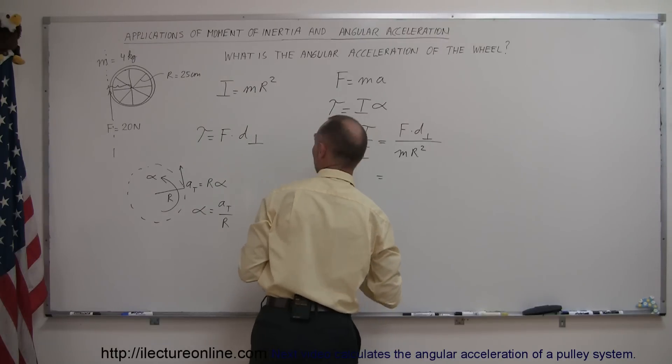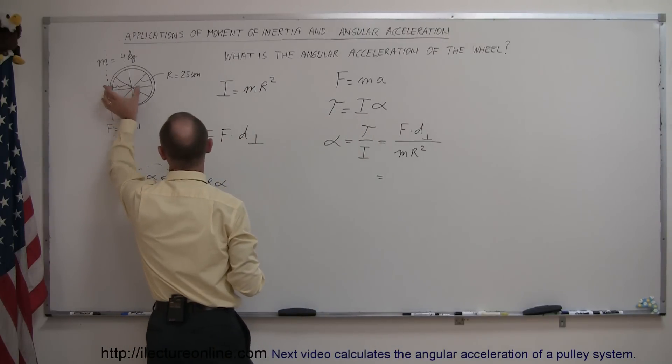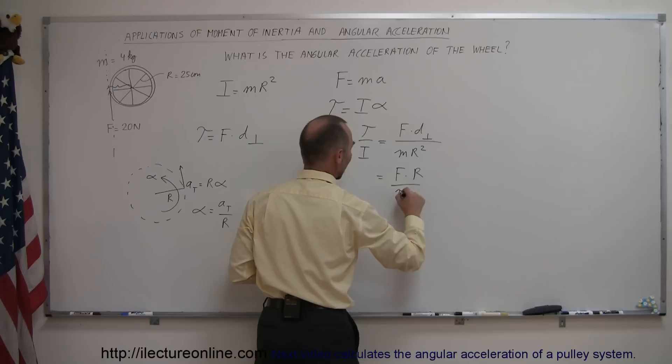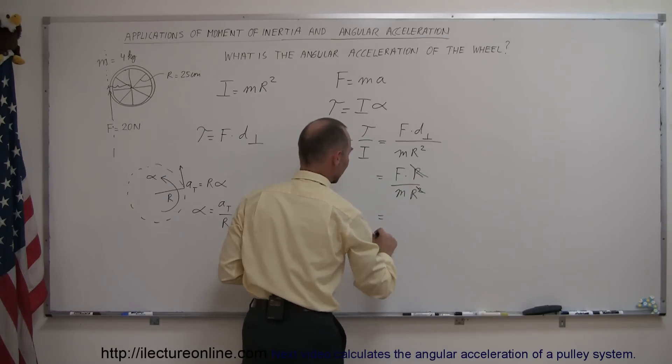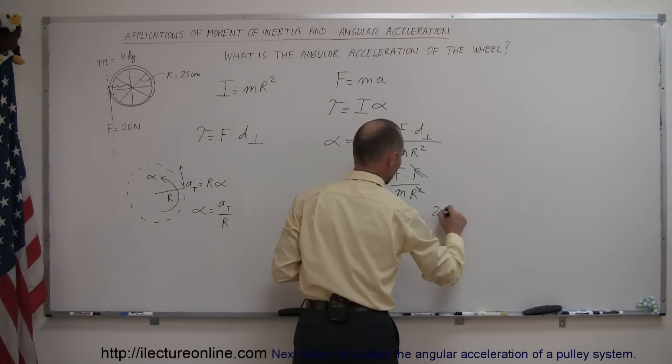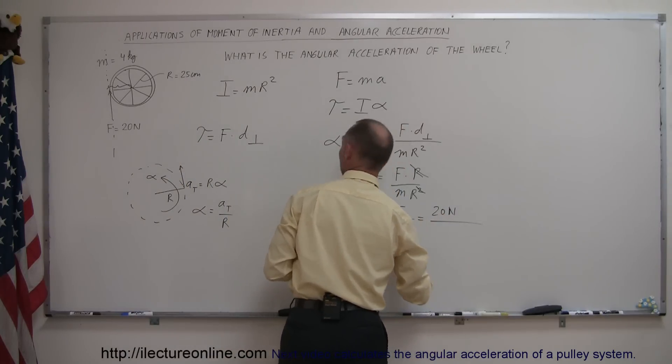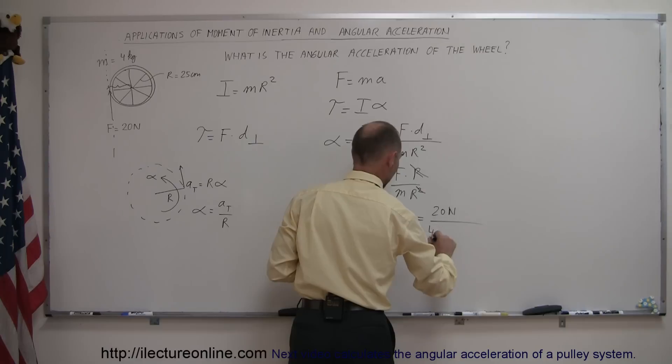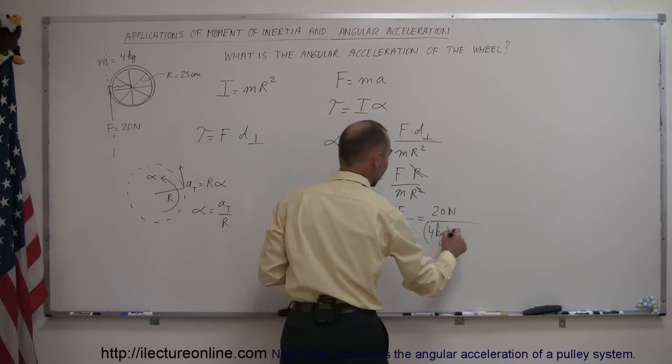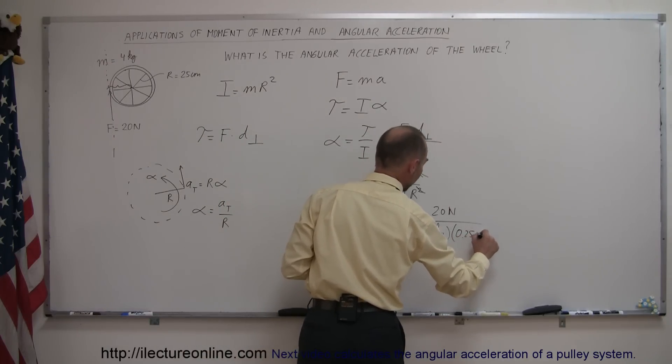Now, plugging in all those things, well, first of all, the distance right here is the radius of the wheel, so that's F times the radius divided by mr squared. So this r cancels out that r, and finally we have F divided by mr. The force applied tangentially is 20 newtons. The mass of the wheel is 4 kilograms, and the radius is 25 centimeters, which is 1 quarter of a meter, 0.25 meters.